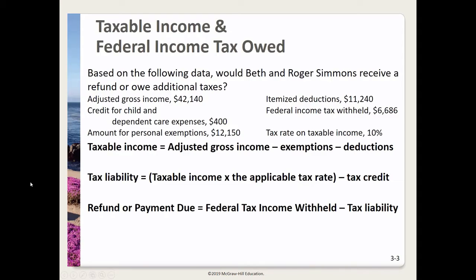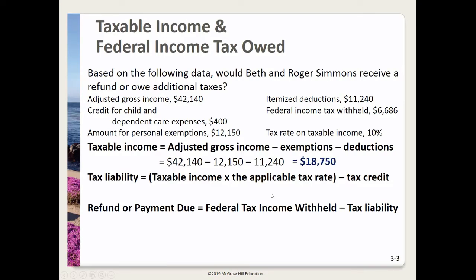In this next example we're going to be working with taxable income and the federal income tax owed. Based on the following data, would Beth and Roger Simmons receive a refund or owe additional taxes? First we need to calculate the taxable income — how much of their income can be taxed. We'll take the adjusted gross income minus any exemptions minus any deductions. Our adjusted gross income was $42,140, and we'll subtract personal exemptions of $12,150 minus itemized deductions of $11,240, giving us a taxable income of $18,750.